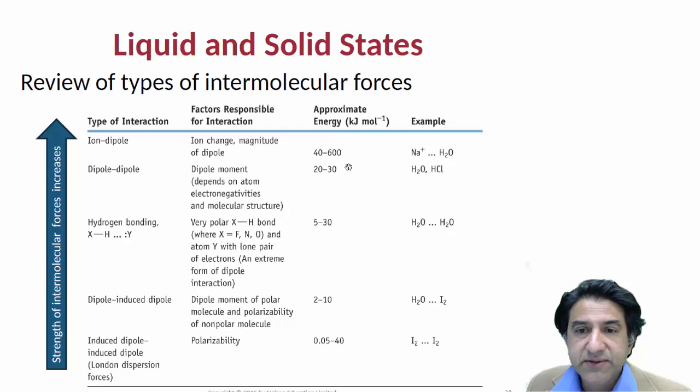And here is the example over here. And we have the typical energies around about 40 to 600 kilojoules per mole. These are very, very strong forces. Ion forces are very strong in the hundreds of kilojoules per mole, and ion-dipoles would be in the tens.